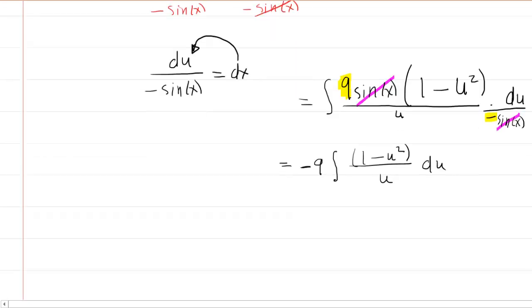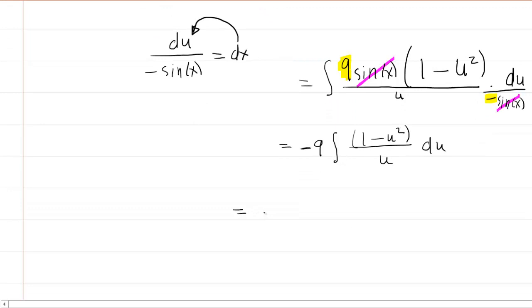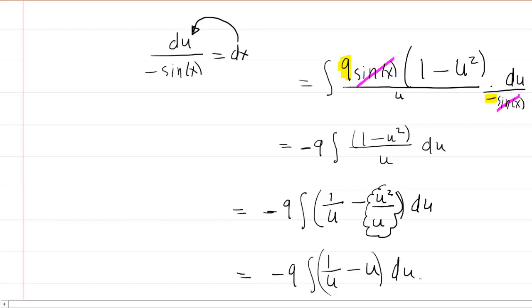Now, this is a much simpler integral to evaluate, but before we evaluate it, let's continue to simplify it. We're basically going to split the numerator. So you're allowed to rewrite this as 1/u - u²/u. There's a little bit of simplifying here. u² divided by u is just u. So we're going to rewrite it one more time: -9 times the integral of 1/u - u, du.